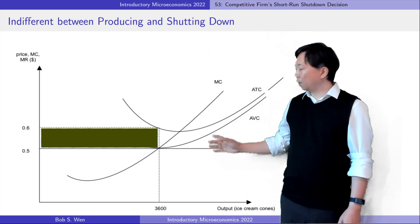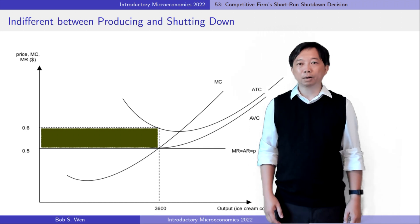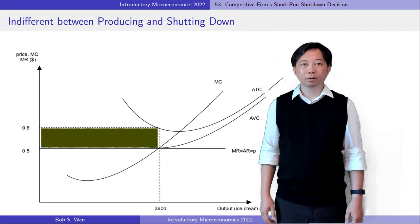From the graph, we can calculate its fixed cost. It is equal to the total cost minus the variable cost, which is 360 dollars.